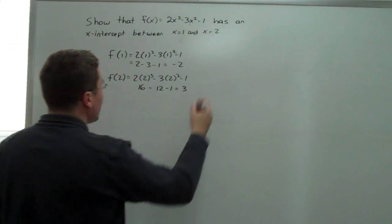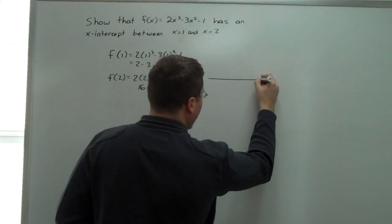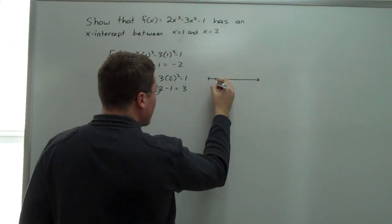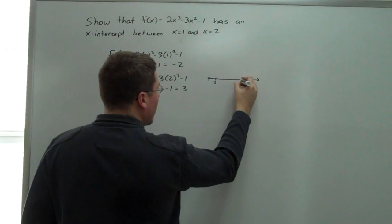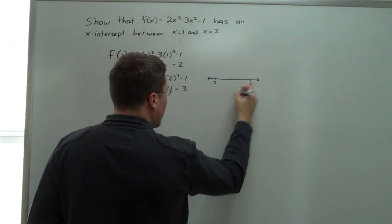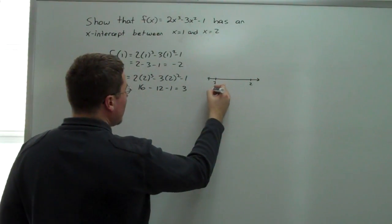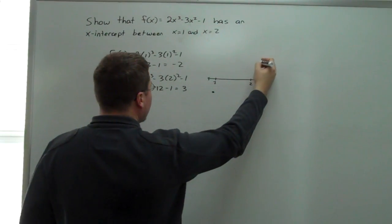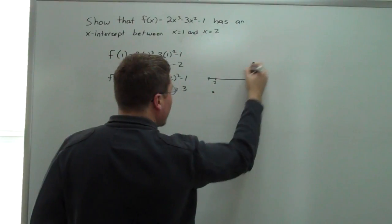So, because f of 1 is at, if I were to draw an x-axis, and I were to label 1 and 2, I can show that f of 1 is negative 2, that's somewhere down here. And f of 2 is 3, which would be somewhere up here.